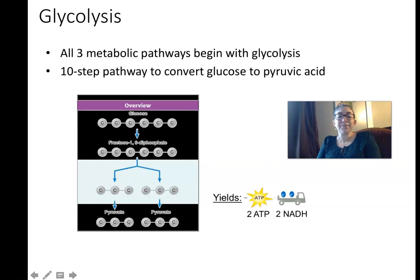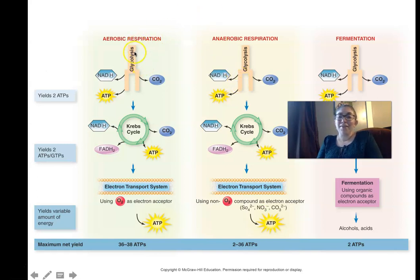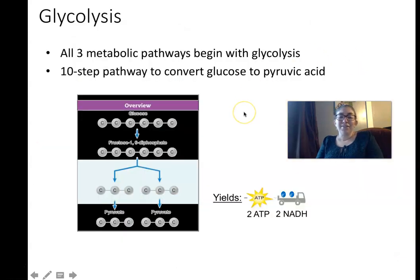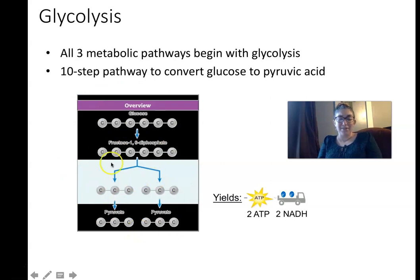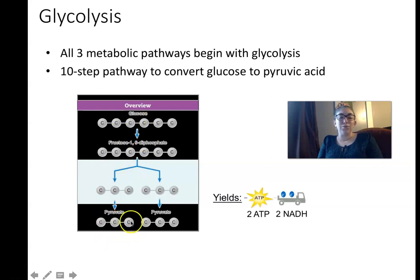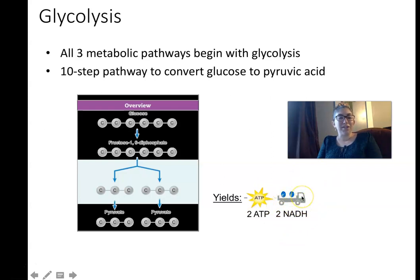The first stage of catabolism is glycolysis, common to all three pathways — aerobic, anaerobic, and fermentation. Glycolysis is a 10-step pathway. We take a molecule of glucose (a six-carbon compound) and break it into two three-carbon molecules of pyruvate. Starting with one glucose, you end with two pyruvates, also producing two ATPs and two NADHs — filling two electron carriers with electrons from the redox reactions involved.